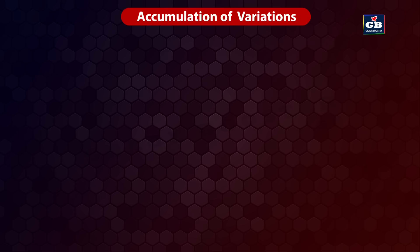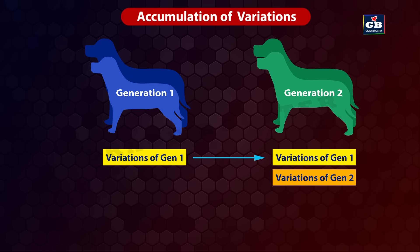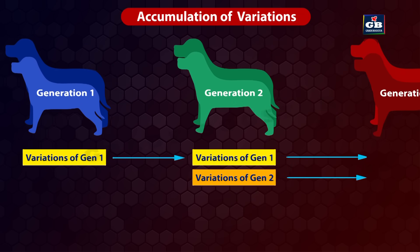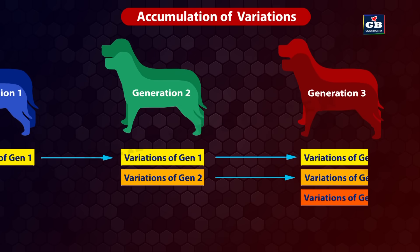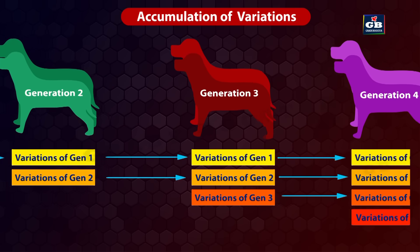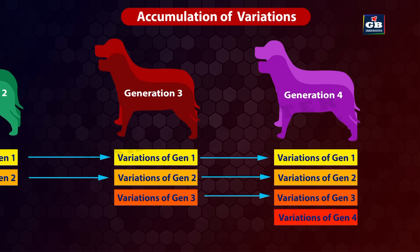The variations in an organism are passed to the next generation. At the same time, in every generation, certain new variations are also formed. In this way, variations get accumulated in organisms over generations. These accumulated variations contribute to the evolution of populations.